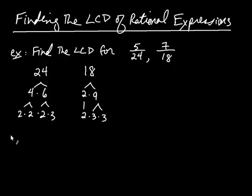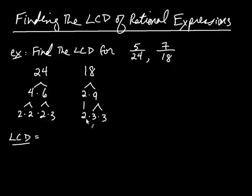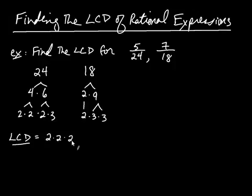Now it's time to build the LCD. You look at the two prime factorizations and start with the lowest prime you see — in this case, 2. You compare the number of 2's each number has: 24 has three 2's, and 18 has one 2. You write down the number of 2's for whichever has the most — so we write down three 2's.